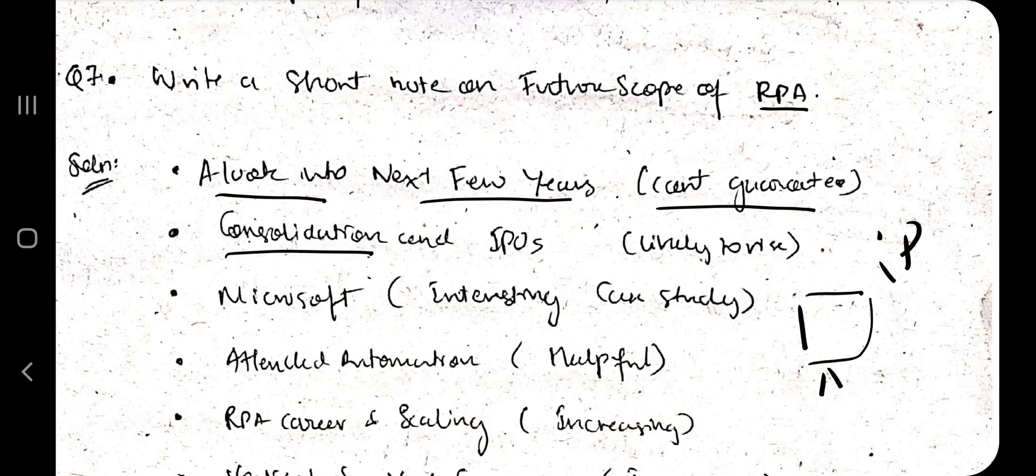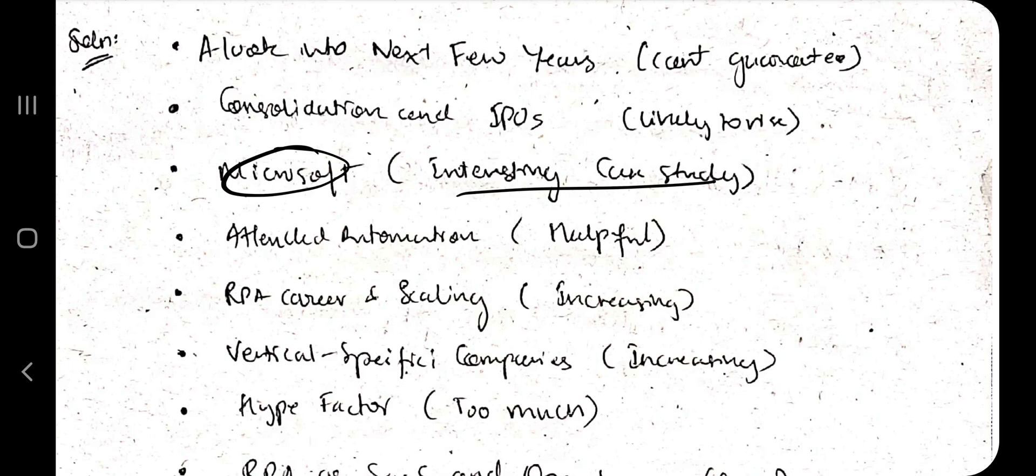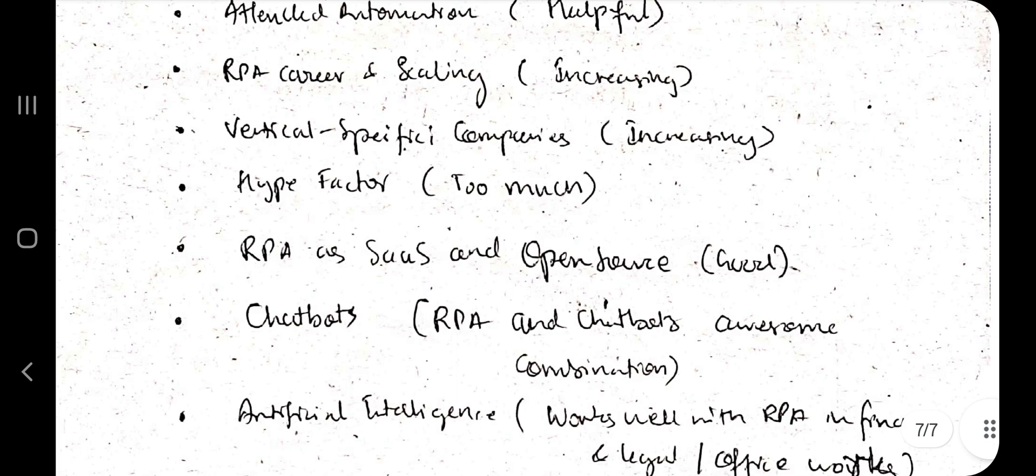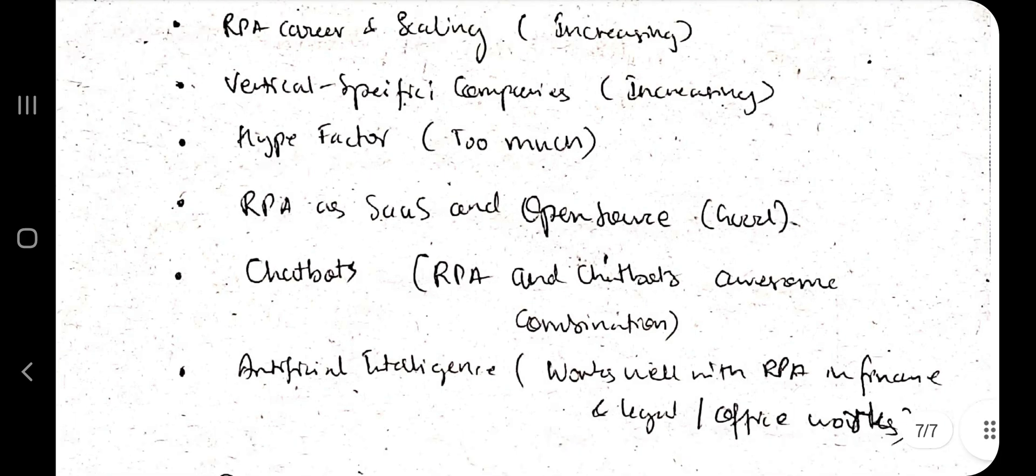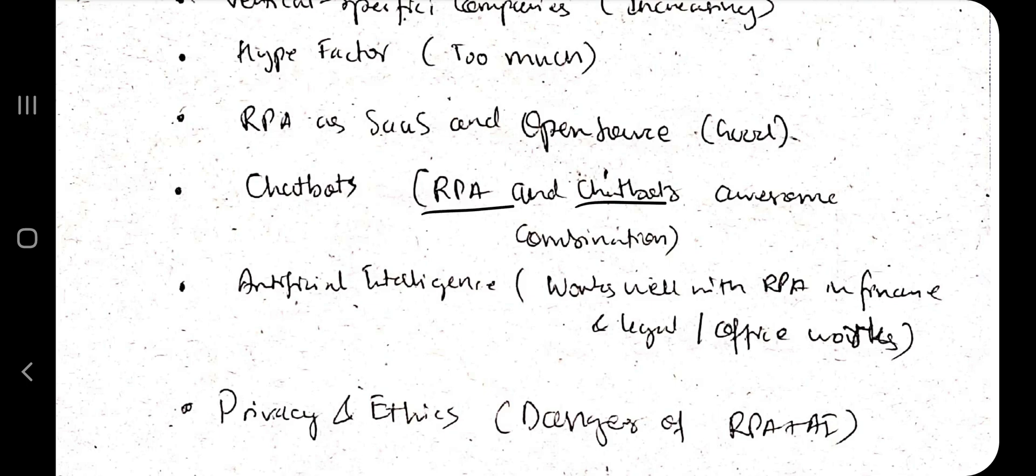It's not guaranteed that RPA will become more famous and more useful in the future, but there is a slight chance that it will become as well. Next one is consolidation, consolidation means making something more solid. IPOs means initial public offering, whether the public will like it or not. Microsoft is an interesting case study. Initially it was useless, now it is very useful. Attended automation means human will be involved. Now the RPA is moving towards unattended RPA without the human intervention. RPA career and scaling is increasing day by day. Vertical specific companies are increasing in RPA. Hype factor, there's a lot of hype involved. RPA as a software service and open source, it is good if the RPA gets involved in the SaaS and open source.